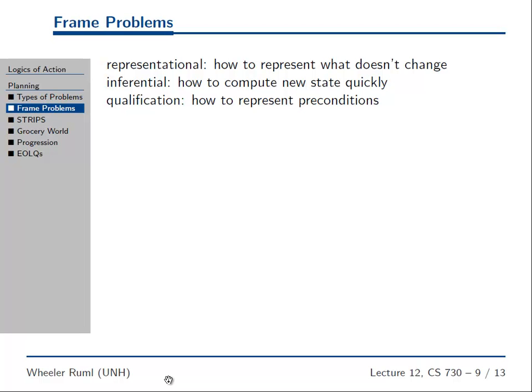That's called the frame problem — when you're talking about an action, how do you frame it? Everything outside the frame maybe stays constant, and only the local things actually change. In fact, due to the speed of light, we can bound the amount of stuff that might feasibly change when we take an action. It's like God is helping us out with the inferential frame problem here.